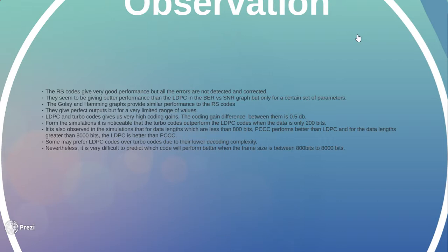The LDPC and turbo codes give us very high coding gains. The coding gain difference between these two codes is 0.5 dB. From the simulations we saw that the turbo codes outperform the LDPC codes when the data is only 200 bits.